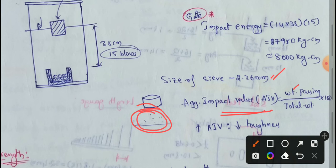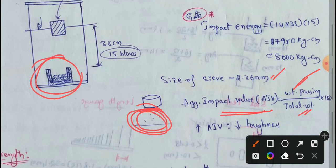Aggregate Impact Value is simple. Aggregate Impact Value equals the weight of passing aggregate divided by the total weight of aggregate, multiplied by 100. This gives the Aggregate Impact Value.